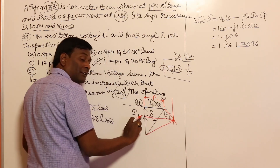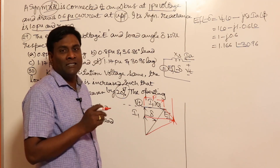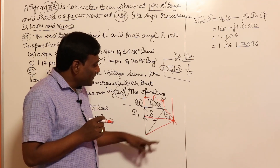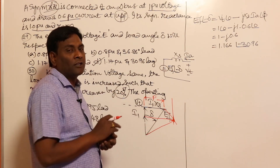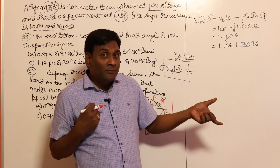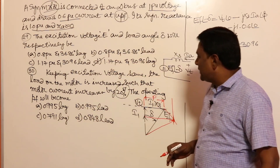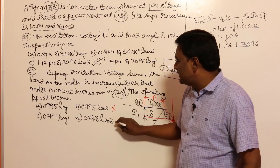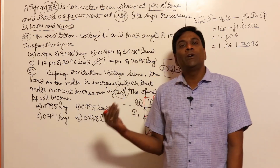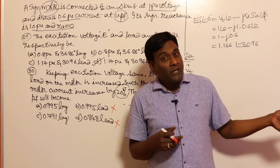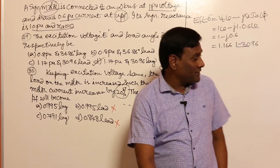EF·cos(delta) will give information about reactive power. Now EF·cos(delta) is less than VT. So reactive power supplied = (EF·cos(delta) − VT)·VT/Xs — since EF·cos(delta) is less than VT, it will absorb reactive power. When a motor absorbs reactive power, it operates at lagging power factor. So the answer should be among A and C — both lagging options.